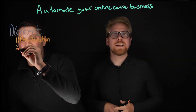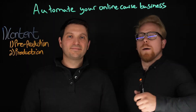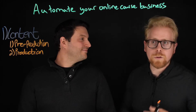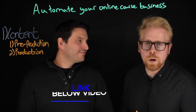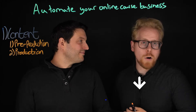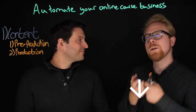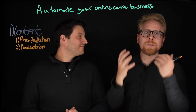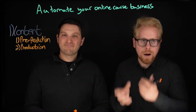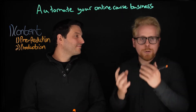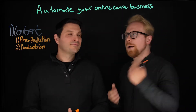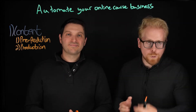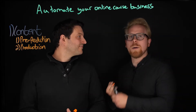Number two is production — that is the second part of the process. The easiest way to do production is to use tools like Loom. Check out the link for a video all about how to use screen capture videos and Loom to create training videos and online course videos. Production is all about actually producing the content. The simpler you keep it, the easier it is to automate. Once you've produced the videos, you don't need to do it again unless you make updates.